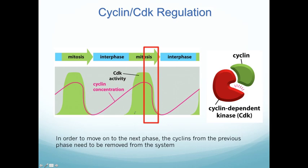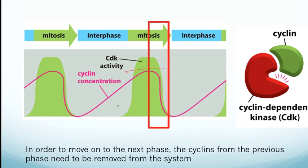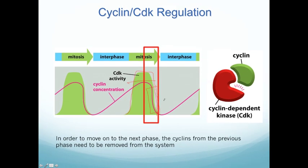Once the cyclin concentration reaches a certain threshold, CDK activity turns on and starts stimulating all the steps in mitosis. When the cell is ready to exit mitosis and go back into interphase, the cyclin concentration drops very fast and rapidly. This drop is what tells the cell to exit a phase of the cell cycle. If you kept the CDK activity on forever, you would be stuck in mitosis forever — so you need a way to turn off this activity to move from one phase into the next.